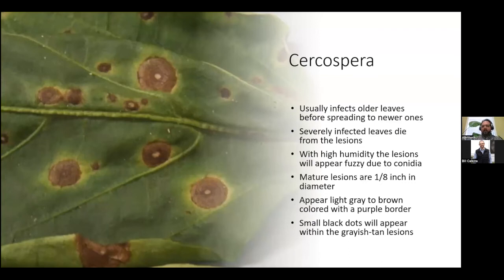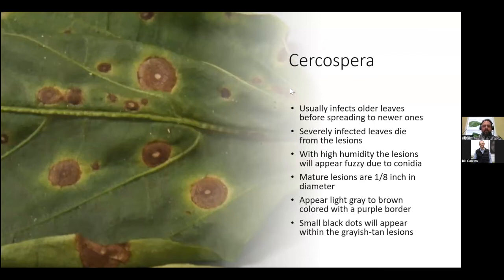The next one I want to review is Cercospora. This one typically affects the older leaves of the plants first before it spreads to the new ones. Once the leaf is severely infected, it will die from the lesions. When you have high humidity in conjunction with the disease, you will get conidia, which are a spore. The mature lesions are typically about an eighth of an inch in diameter, appearing gray to brown in color with a purple border on them.